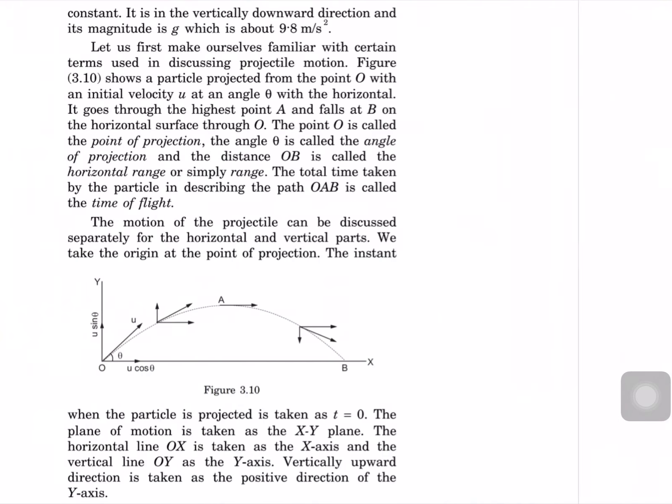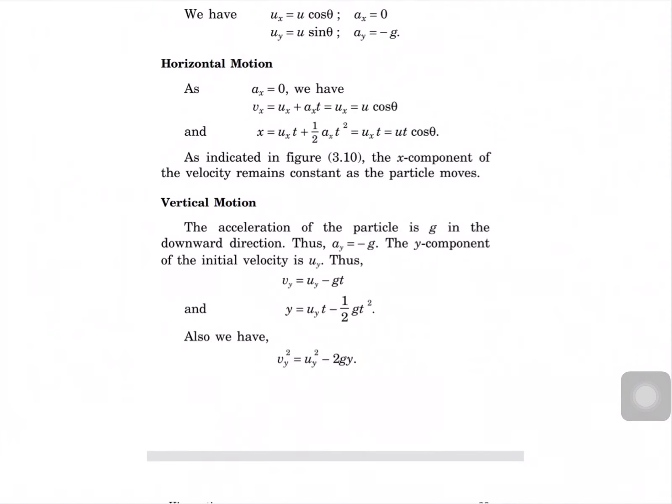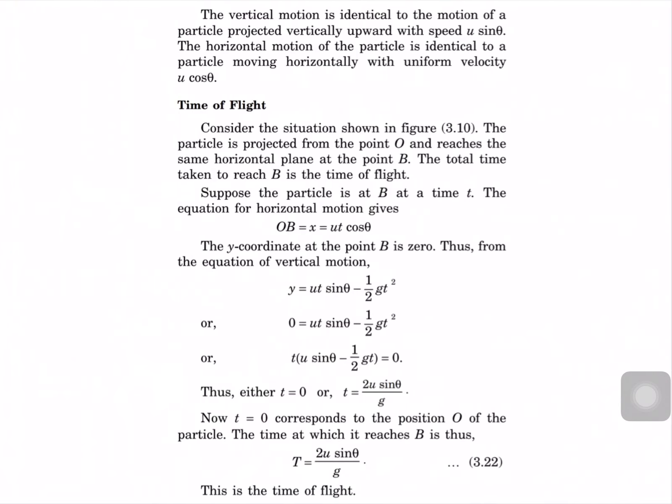For time of flight, the horizontal distance OB equals x equal to U cos theta times t. The y coordinate at point B is zero, so: 0 equal to U sin theta times t minus half g t squared. Solving, t equal to U sin theta by g. This corresponds to t equal to zero at O, so the time to reach B is T equal to 2U sin theta by g. This is the time of flight.